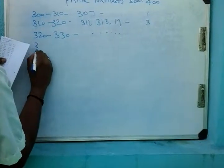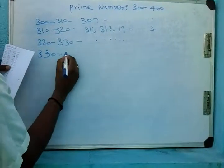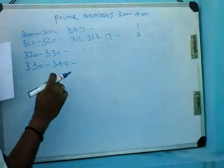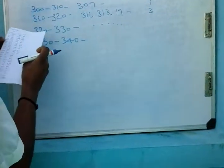Now we are going to see 330 to 340. 331 is not, 337 is not — checking candidates in this range.